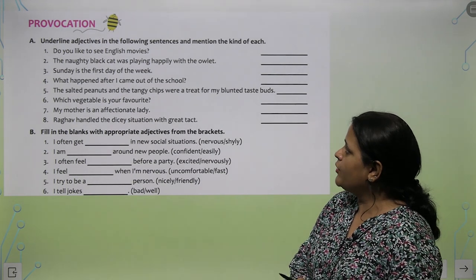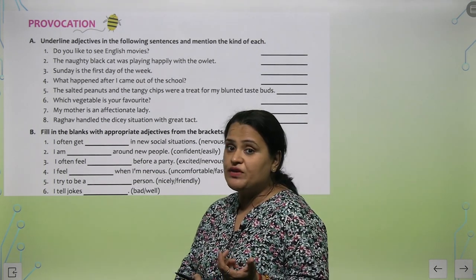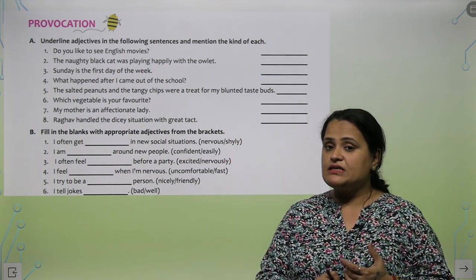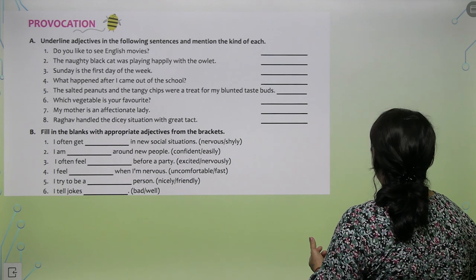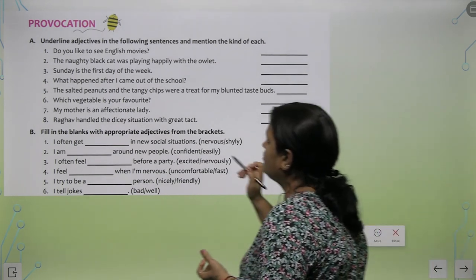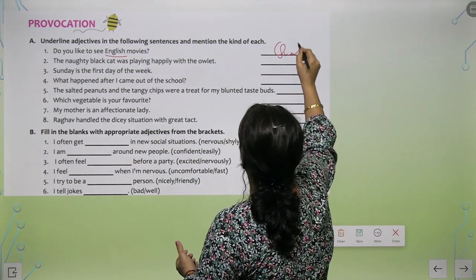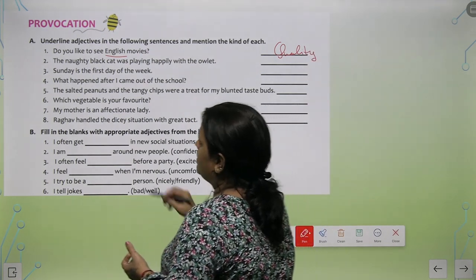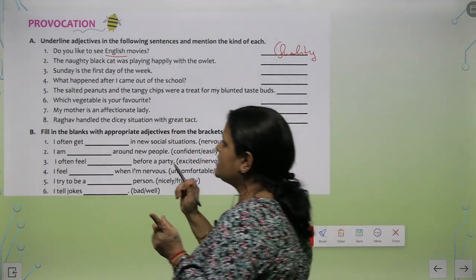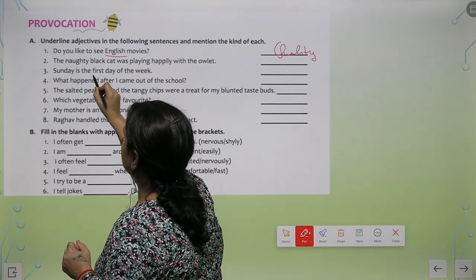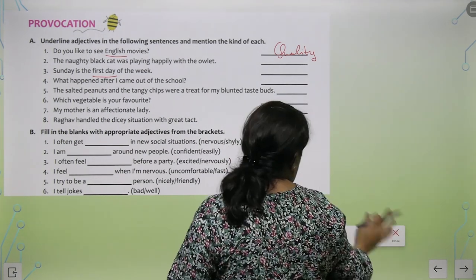Now the first exercise in your book — underline the adjective in the following sentences and mention the kind of each. 'Do you like to see English movies?' — Aap movies dekhna pasand karte ho, but kis tarah ki? English movies — so what is the quality of movie here? That the movie is of English, so this is adjective of quality. 'Sunday is the first day of the week' — sunday ki kya quality hai? That it is the first day, so this is adjective of number.